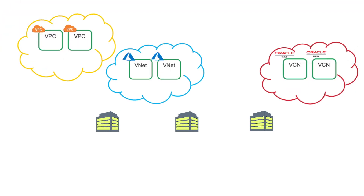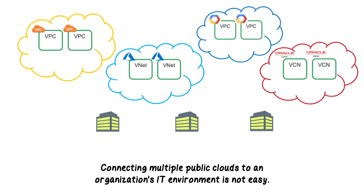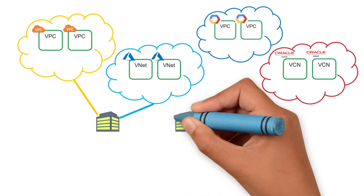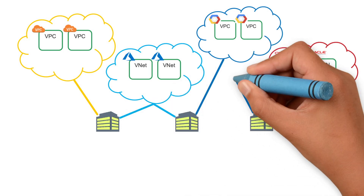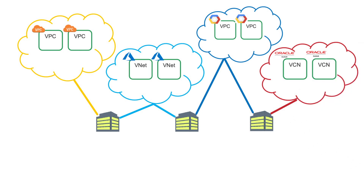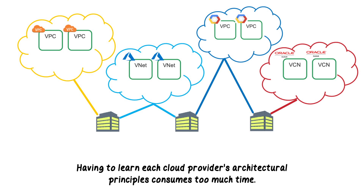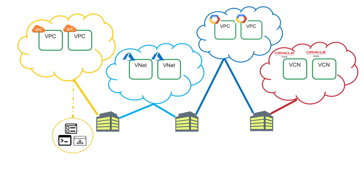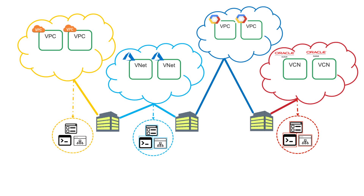With more organizations incorporating multiple public clouds, such as AWS and Azure, into their IT environments, connecting these environments is not easy. You would need to use native cloud services, such as VPNs or private links, to backhaul traffic to on-premises locations before that traffic is redirected to other public clouds. That requires learning the architectural principles used by each cloud provider, and that consumes valuable time. Then imagine the number of management and monitoring tool interfaces you need to navigate so that you can build, scale, and monitor this multi-cloud environment. They add up, and conducting day-to-day network operations cannot be done efficiently, adding to overall IT overhead.